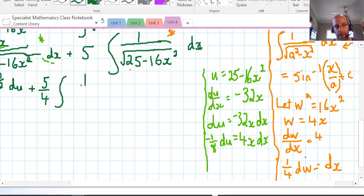Subbing in with a squared, we've got 5 squared in fact, so this rule needs to be followed strictly. We've got w squared now instead of 16x squared, and we can just write in the dw because we've taken care of that quarter already.